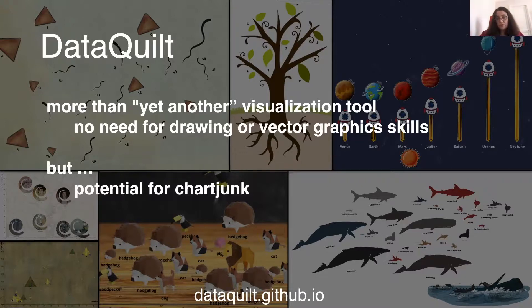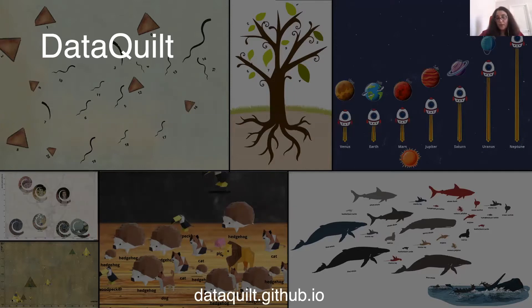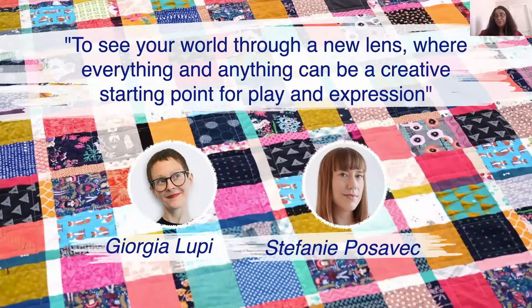The second caveat is that authors might choose bindings that are not well suited for the underlying data dimension. We have taken steps to mitigate this — for example, proposing discrete versus gradient color palettes for categorical versus numerical data — but there is always a potential for badly chosen bindings. To summarize, we're very happy to introduce DataQuilt: both an approach and a tool for creating beautiful visualizations where anyone can repurpose elements of raster images as glyphs, aided by image processing techniques and a smooth iterative process. We'll leave you with a call to see the world around us as a starting point for creativity and self-expression. Thank you.